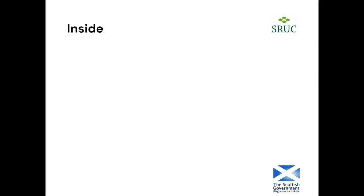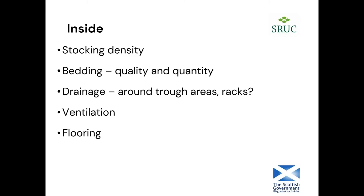Inside, consider your stocking density, the quality of your bedding — is it damp or moldy, do you have plenty of it — and drainage around trough areas and racks. Ventilation also makes a difference: good ventilation helps the top layer of bedding dry out again, whereas a badly ventilated, muggy shed increases moisture and makes things worse. The type of flooring matters too — is it drainable and easily cleaned and mucked out?